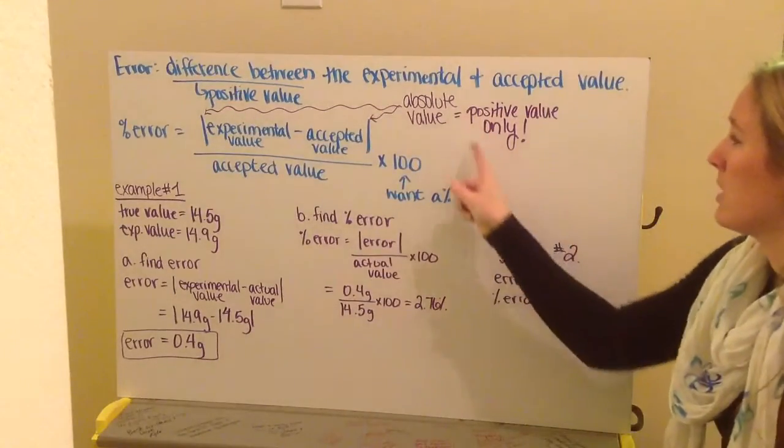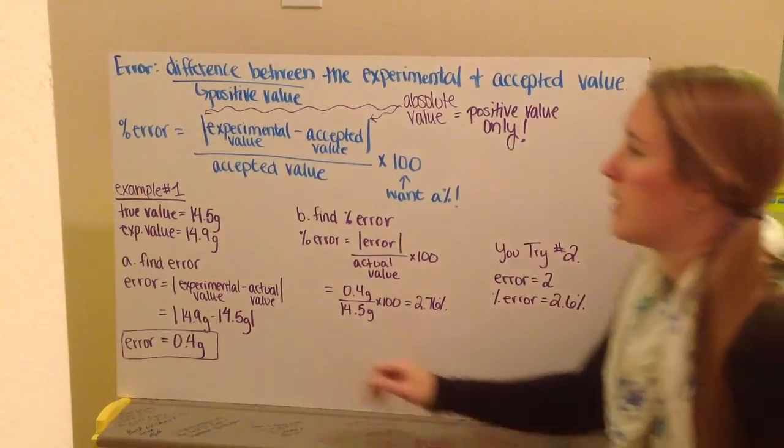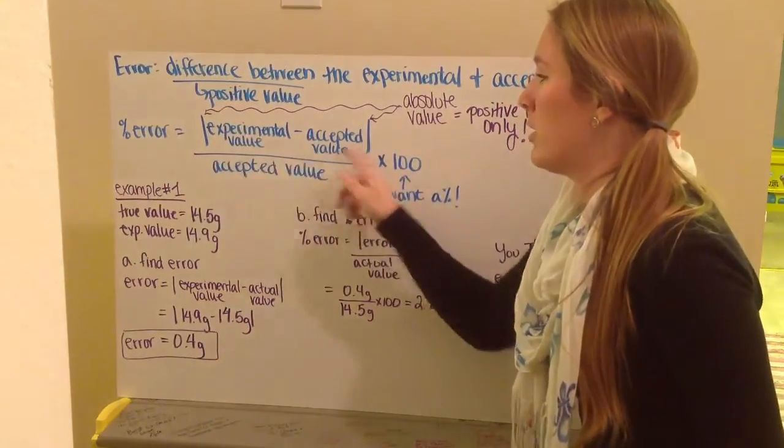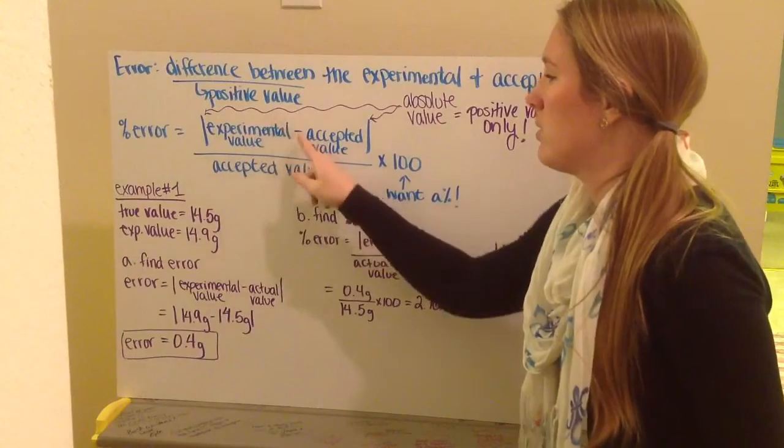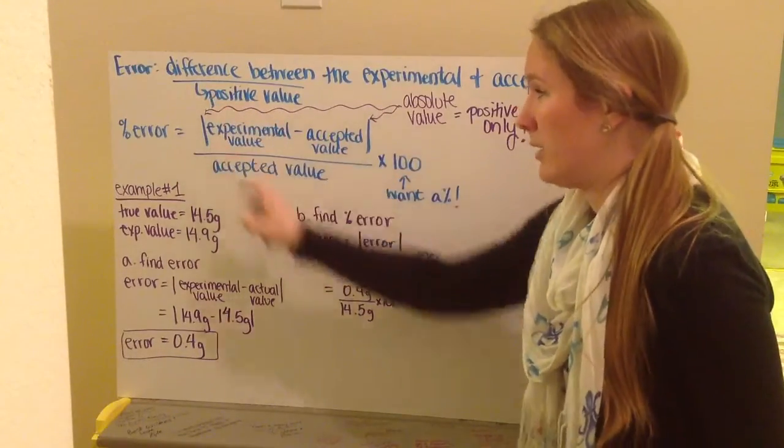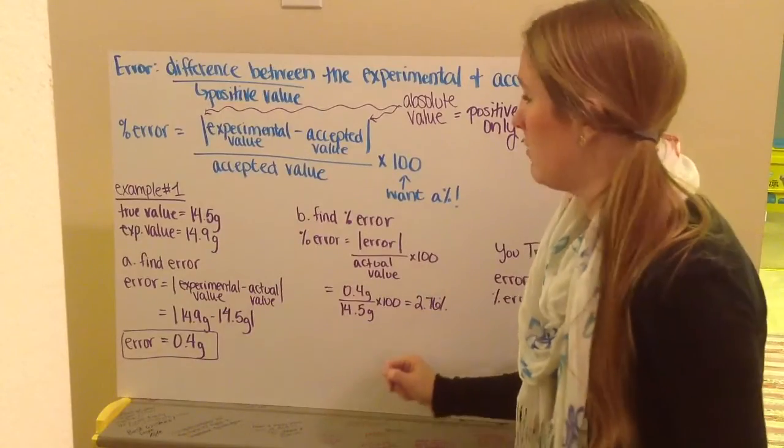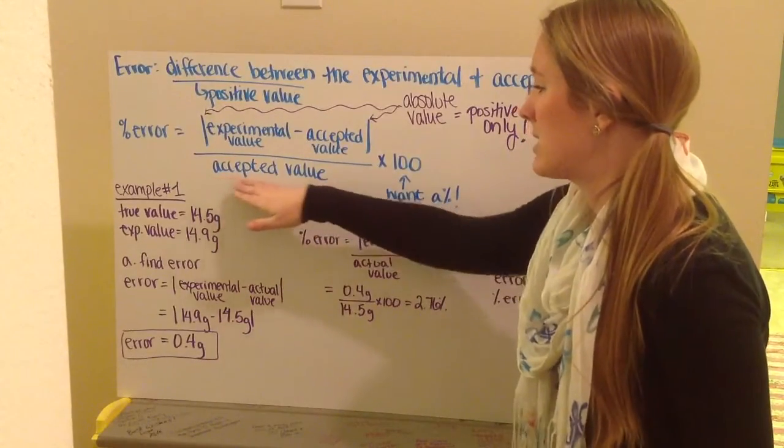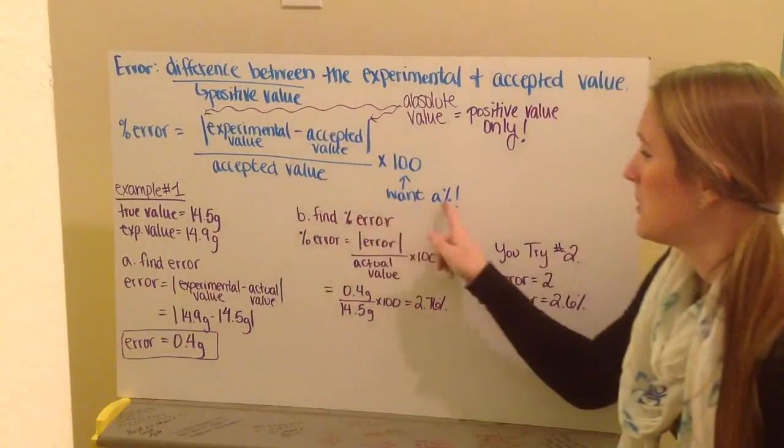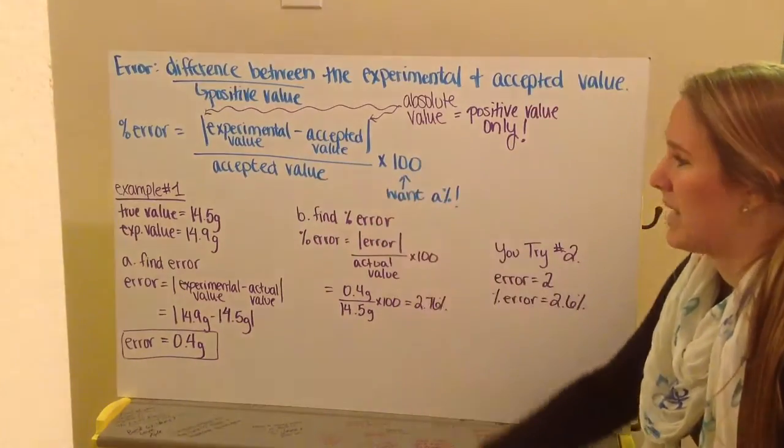And that tells you that it only can be a positive value. So to calculate percent error, that is my amount of error, my experimental value minus my accepted value, the absolute value of those, the positive version of those, divided by my accepted value. This gives me a decimal. I want it to be a percent, so I need to multiply it times 100.